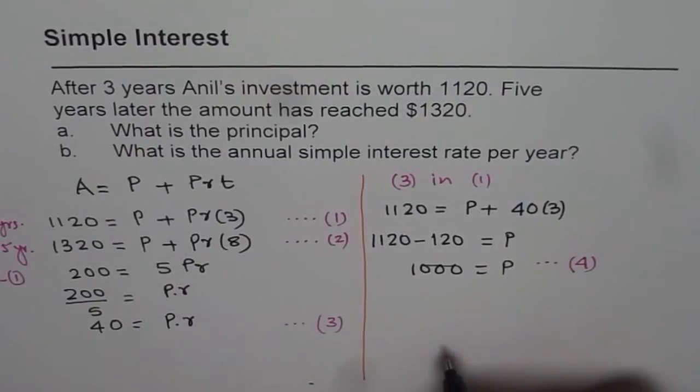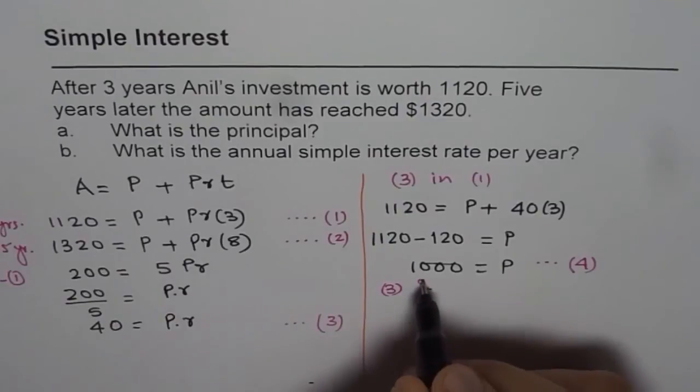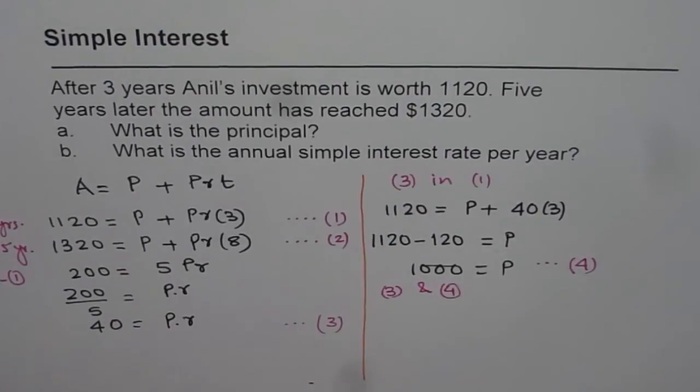And now using equation three and four, find the value of R. P times R is 40. P is $1000. Therefore, what is R? R is equals to 40 divided by P.